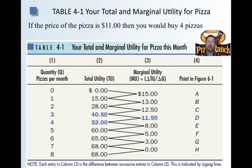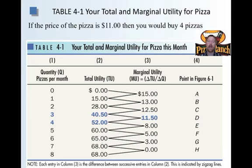Let's look at pizza again. You have total utility and marginal utility for each pizza you buy. The first pizza gives $15 of total utility, the second a total of $28, the third $40. Marginal utility is the added satisfaction of each pizza. From zero to one pizza: $15 marginal utility. From one to two: $28 minus $15 equals $13. Until you reach your fourth pizza, which gives a marginal utility of $11.50. If the price is $11 per pizza, you would want to buy four pizzas — because your marginal utility of $11.50 is closest to the price of $11, and that's where you maximize your satisfaction.